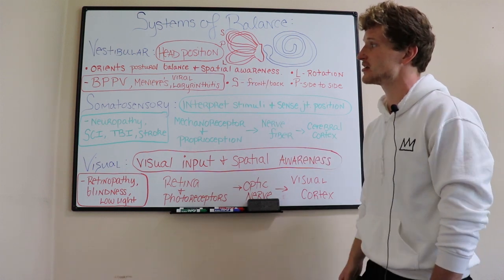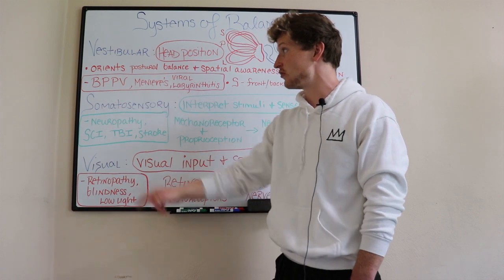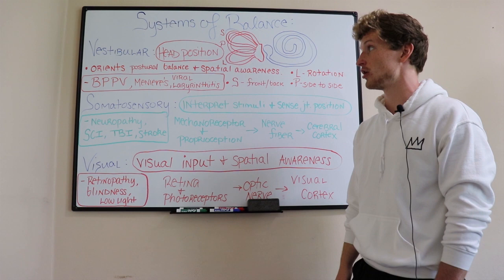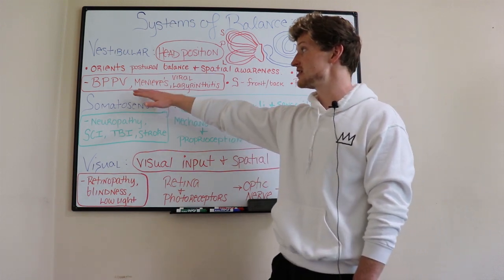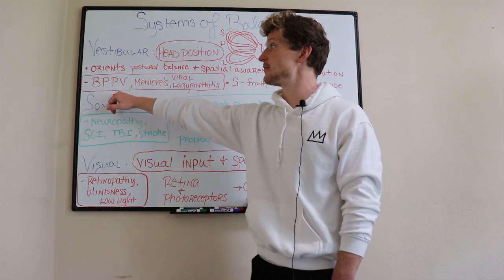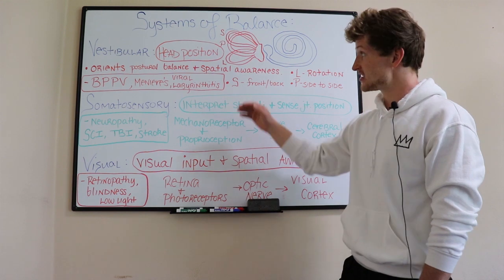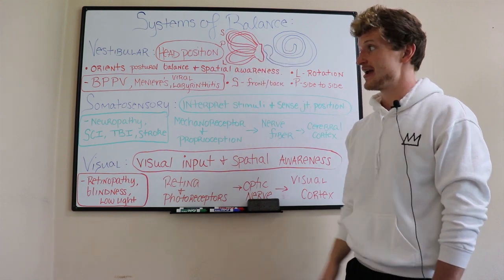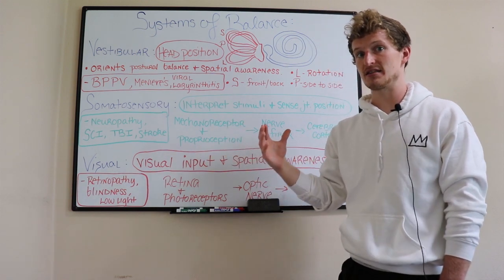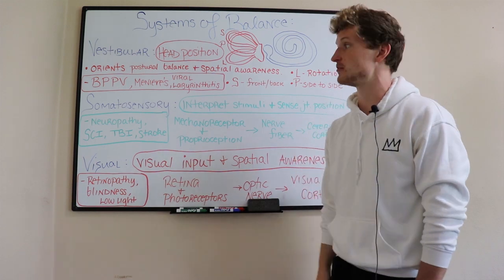Some things that affect the vestibular system include benign paroxysmal positional vertigo, which is the most common form of vestibular deficit or infarct, Meniere's disease, and viral labyrinthitis. BPPV is typically in the posterior canal and involves displacement of those crystals. Our body has a hard time telling where our head is in space, and as we move it, we can get dizziness, nausea, and typical vertigo symptoms.